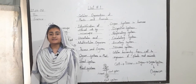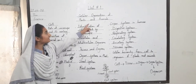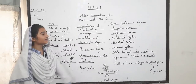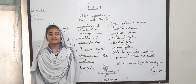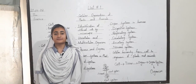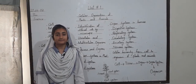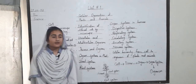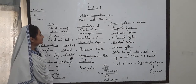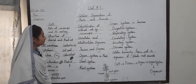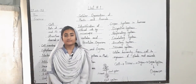Assalamualaikum, my name is Aisha. Today I am discussing about cellular organization of plants and animals. Cellular organization of plants and animals means how cells form an organism. In this chapter we discuss about how a cell, a tissue, organ, and organ system form an organism.